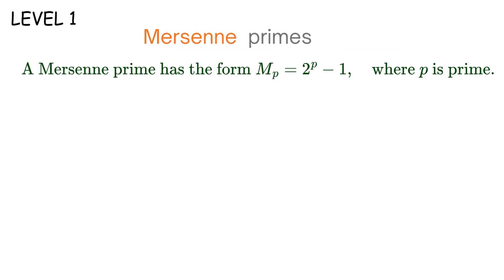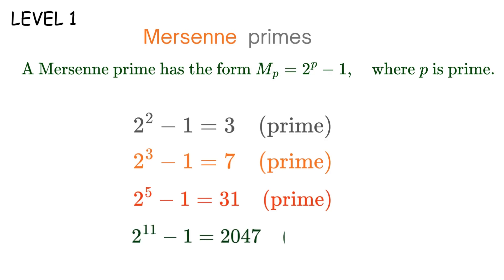Mersenne primes. These are primes of the form 2 raised to the power of p minus 1, where p itself is prime. So let's try it. 2 raised to the power of 2 minus 1 equals 3. That's prime. 2 raised to the power of 3 minus 1 equals 7. Prime. 2 raised to the power of 5 minus 1 equals 31. Prime. 2 raised to the power of 11 minus 1 equals 2,047, which equals 23 times 89. Not prime.